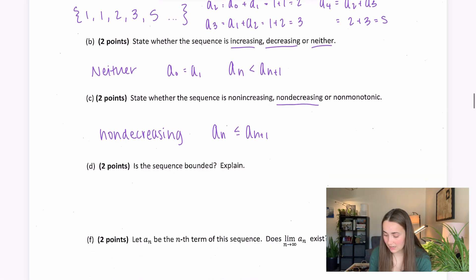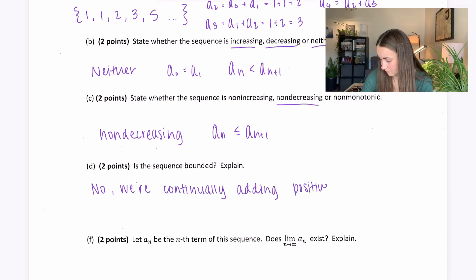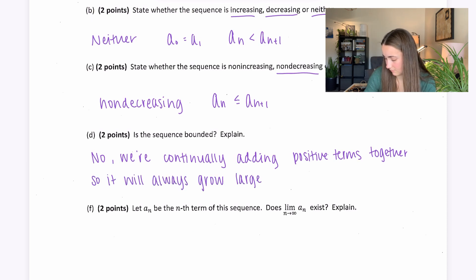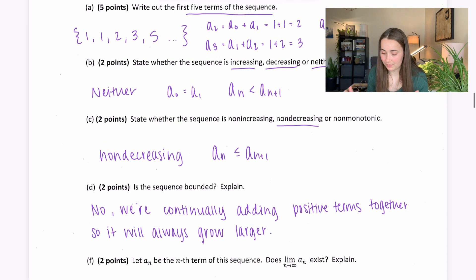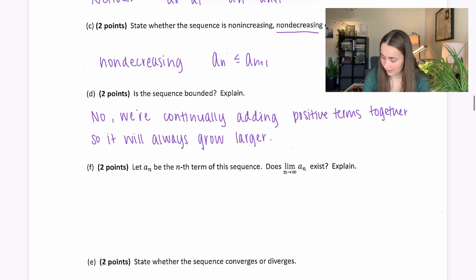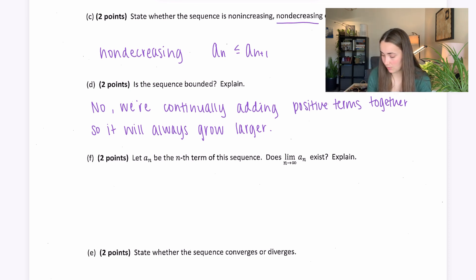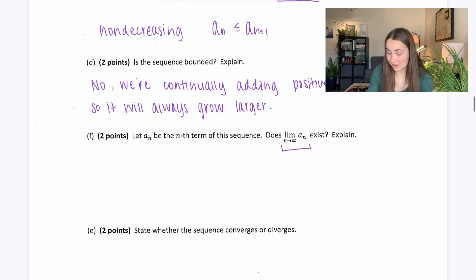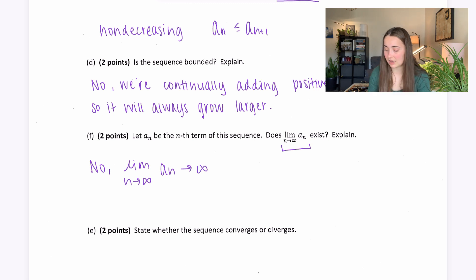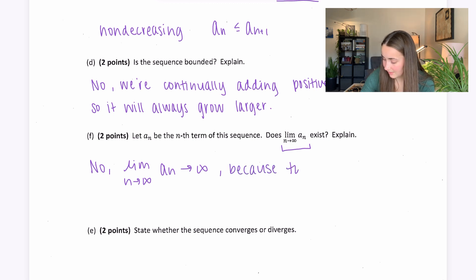Is the sequence bounded? No — you're forever adding terms that get bigger and bigger. We're always adding positive terms; our fifth term is already 5, and the next would be 3+5=8. Does the limit as n→∞ of a_n exist? No, it does not. The limit approaches infinity as terms grow without bound. The sequence is not bounded.